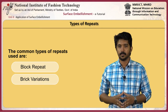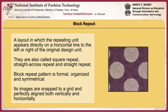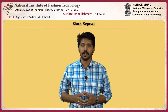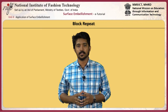The common types of patterns used are block repeat and brick variations. A block repeat is a layout in which the repeating unit appears directly on a horizontal line to the left or right of the original design unit. They are also called square repeat, straight across repeat, and straight repeat. Block repeat patterns are formal, organized, and symmetrical — images are snapped to a grid and perfectly aligned both vertically and horizontally. The motif contained within a square or rectangle is repeated in straight lines across and down.